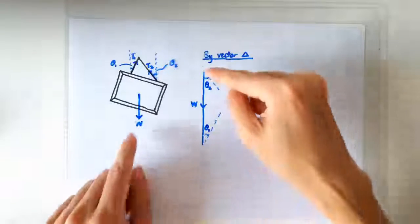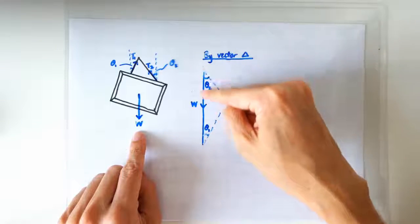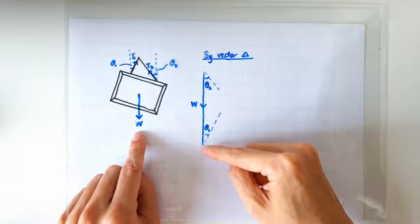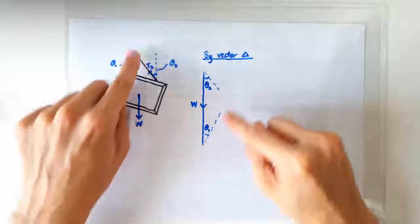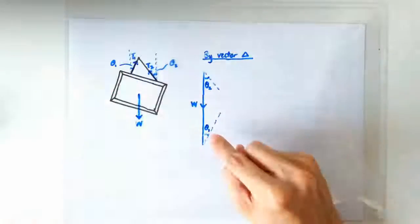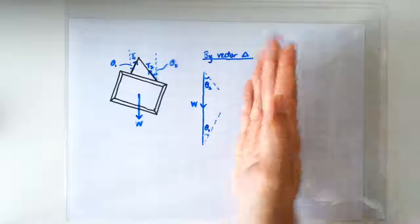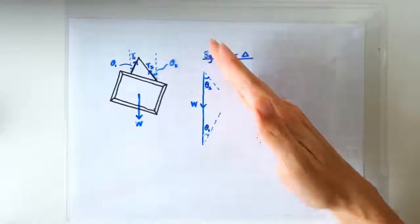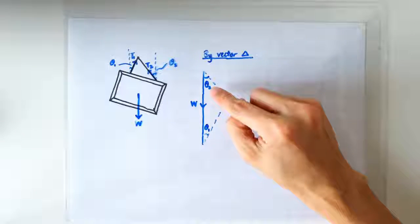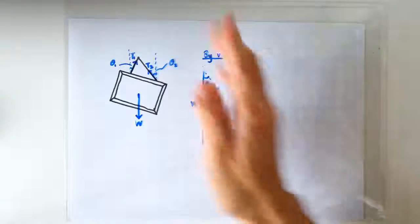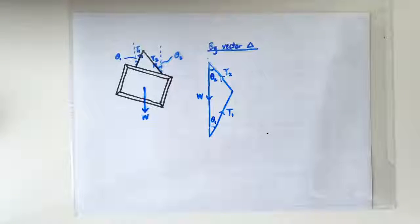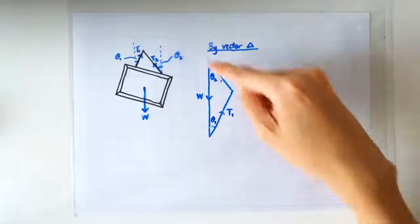So our vector triangle will start with the weight acting vertically downward, and then we'll continue with T1 acting in this direction, making an angle of theta 1 with the vertical. After T1, we'll close off the triangle with T2 acting along this direction, making an angle of theta 2 with the vertical. So this is what our vector triangle is going to look like.